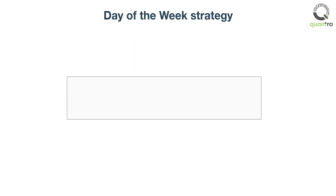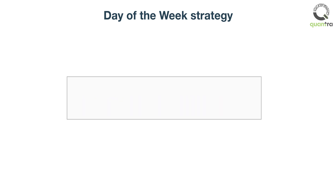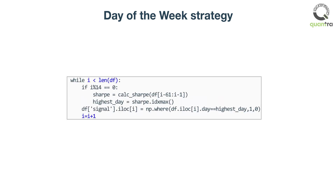For the next two weeks, set the value of the signal column to 1 for the day with the highest Sharpe ratio, or to 0 otherwise. The value of 1 indicates that we are long on Bitcoin on that day. These steps are repeated for all trading days using a while loop.